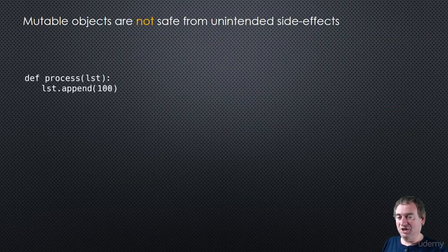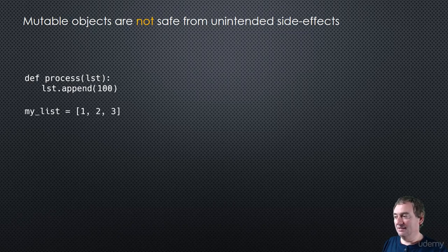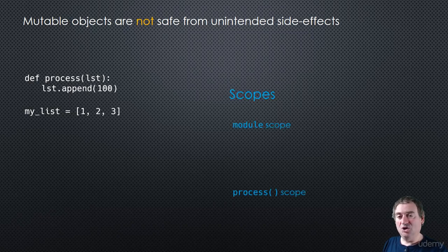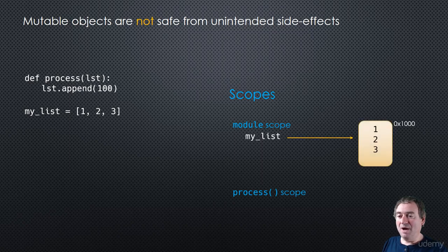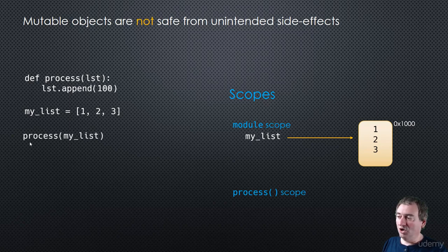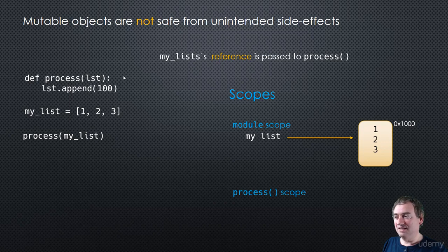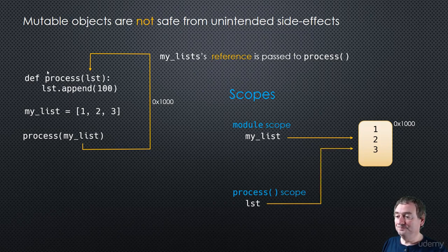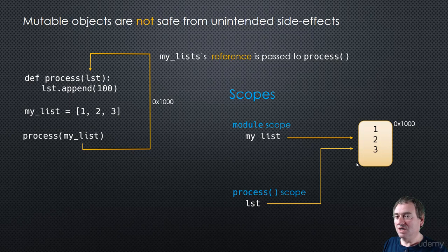Let's say we have this function process, which takes in a list and it's going to append a value to that list. In our module code we have mylist equals the list one, two, three. We have module scope and process scope. Mylist points to some object in memory — a list at memory address 1000. When we call process passing in mylist, we're passing the reference to mylist — 1000 in this case — to the process method. So LST, the local variable in the process scope, points to the same object.